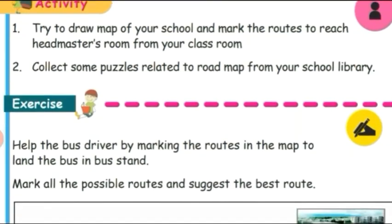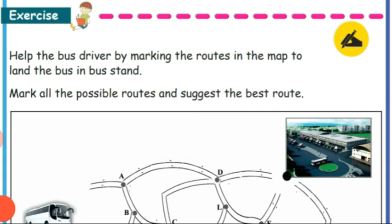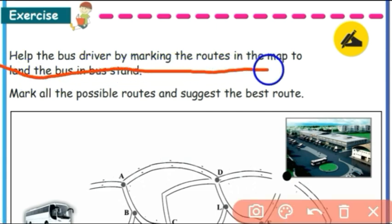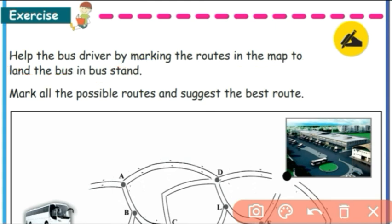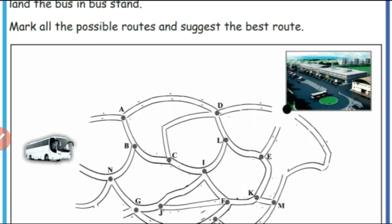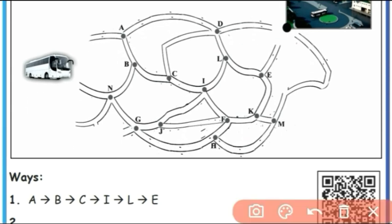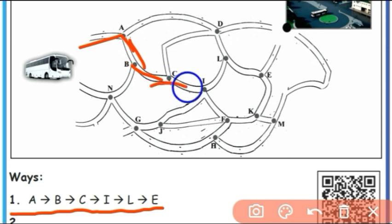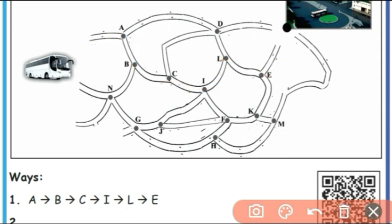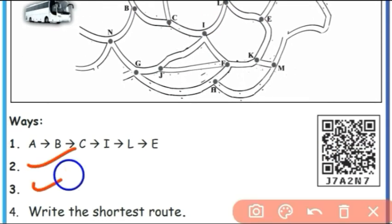See this exercise. Help the bus driver by marking the routes on the map to bring the bus to the bus stand. Mark all possible routes and suggest the best route. One route is already given: A, B, C, I, L, E. You need to find another two routes to get to the bus stand.